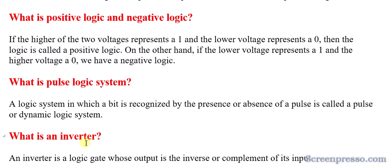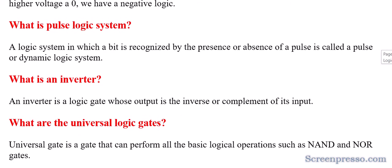What is an inverter? An inverter is a logic gate whose output is the inverse or complement of its input. If you give logic one as input, you get logic zero as output; if you give logic zero as input, you get logic one as output. So the inverter always provides the opposite logic of whatever input is provided.